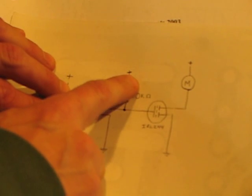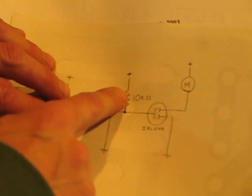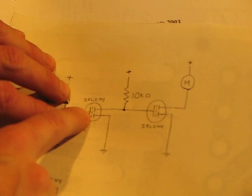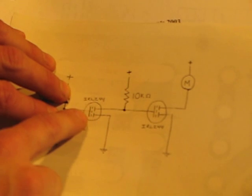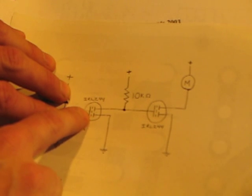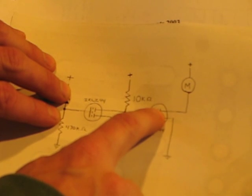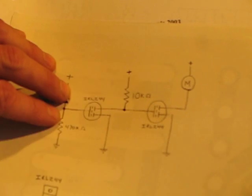Which then creates another voltage divider between this 10K resistor and the MOSFET. Now, the MOSFET's resistance will be a lot less than the 10K resistor when it's turned on. And so that will drive the gate of this MOSFET low, which will turn off the motor.